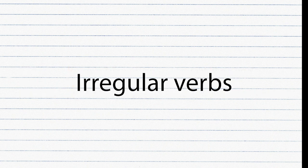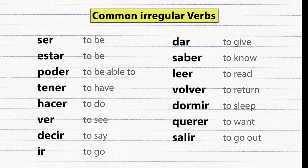Some of the most commonly used verbs in Spanish are irregular verbs, so it's very important to learn and remember them. You don't need to memorize every irregular verb — start with the most common ones: Ser, Estar, Poder, Tener, Hacer, Ver, Decir, Ir, Dar, Saber, Leer, Volver, Dormir, Querer, Salir.